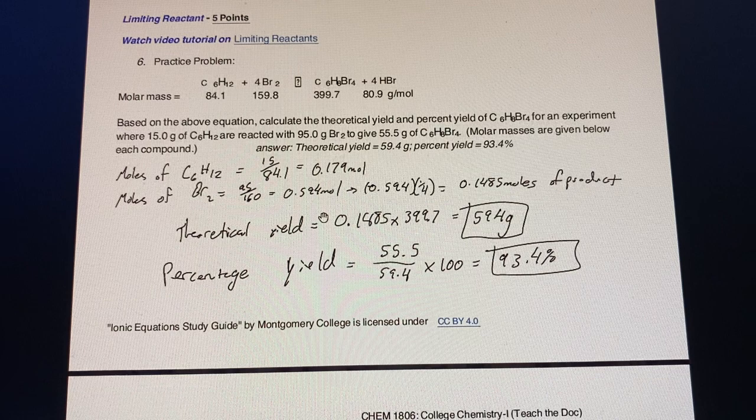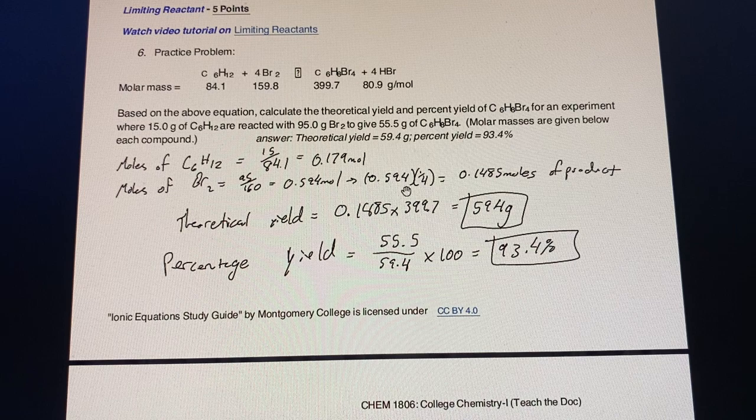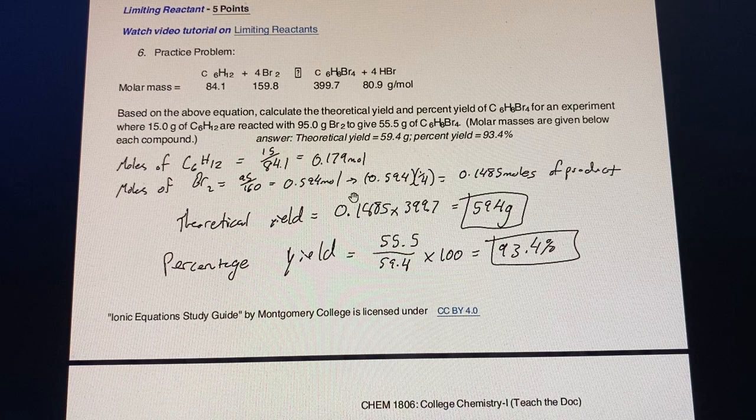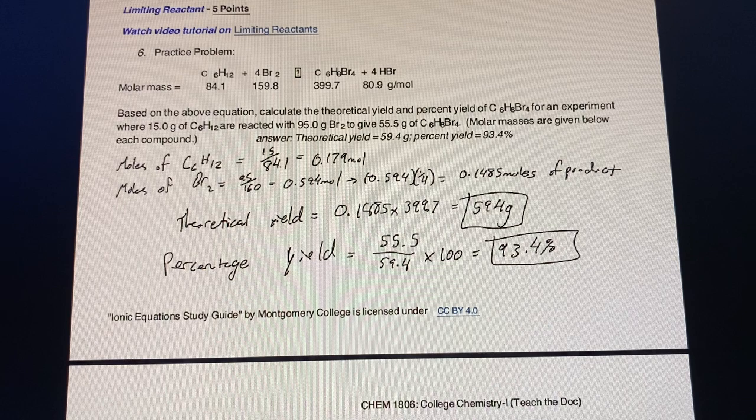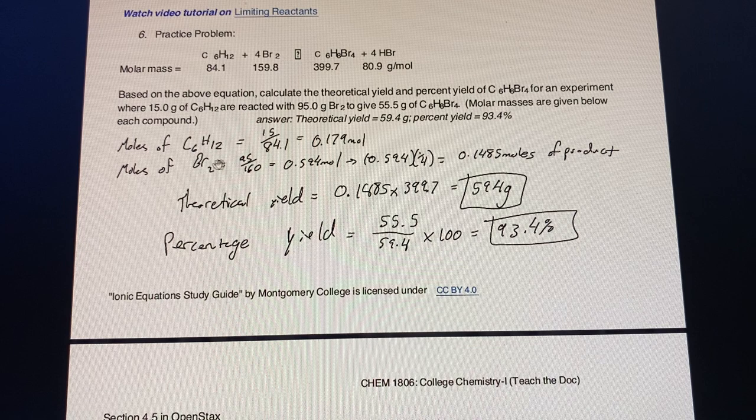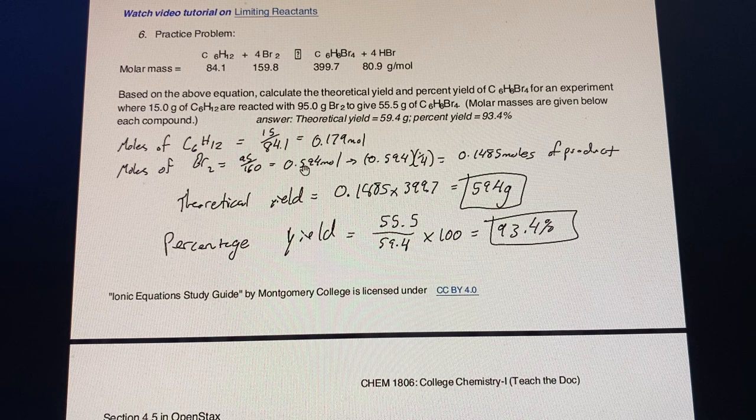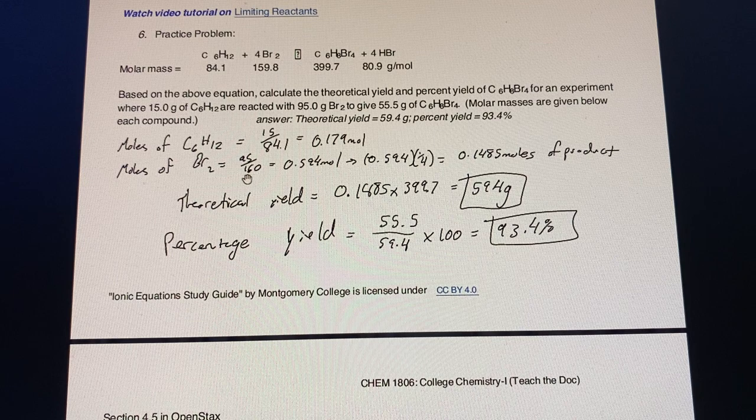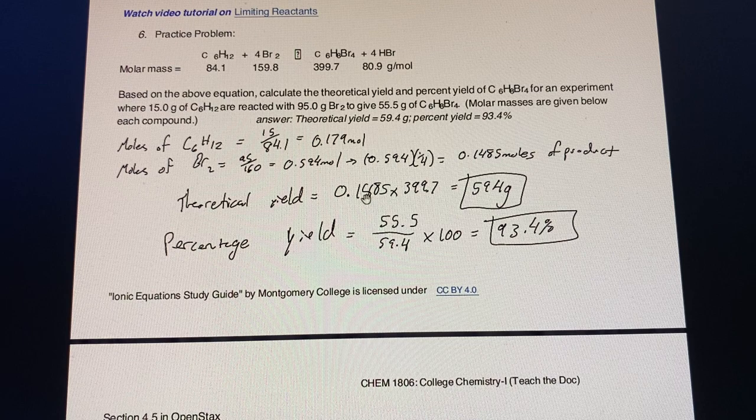We then move into practice problems on limiting reactants. For this first question, we have an equation of Br2 and C6H12 going into C6H8Br4. We calculate the moles in the given equation of the different reactants. What is the limiting reactant? Since we have less reactant of the Br2, we know that is the limiting reactant.